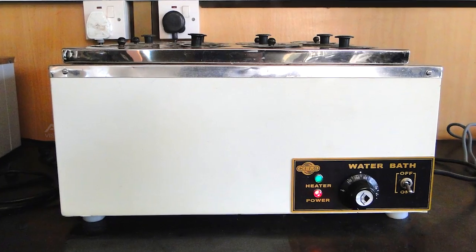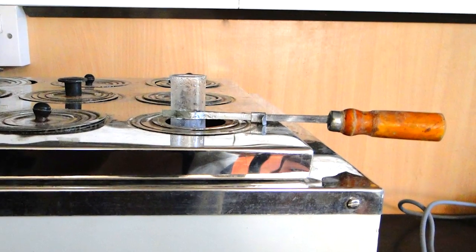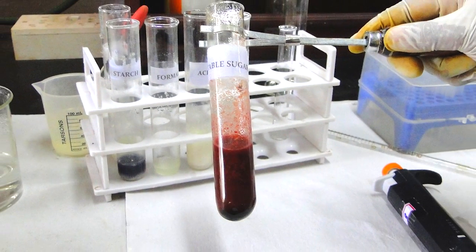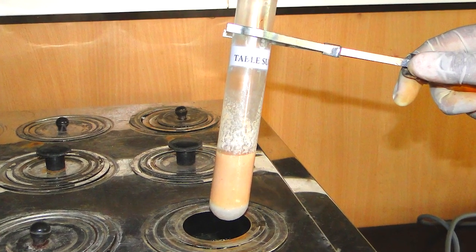Now place the test tube with the test tube holder in a water bath at 100 degrees Celsius for 5 minutes. The color of the milk solution turns red, which shows the presence of table sugar in milk. If the color remains the same, it denotes the absence of table sugar in milk.